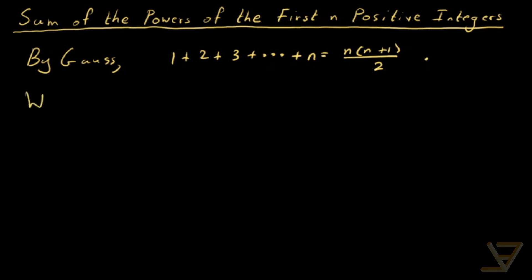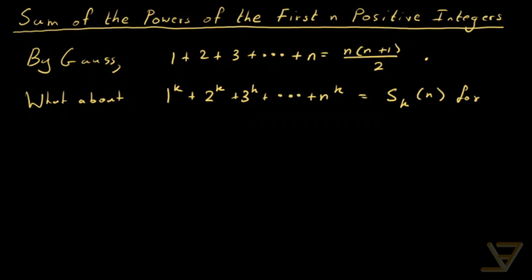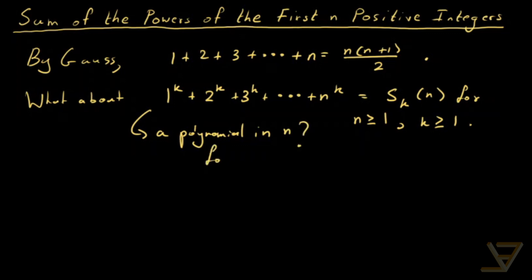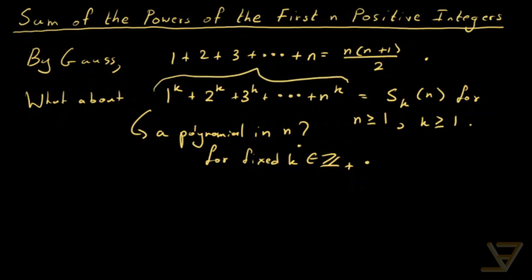The next question is: what about 1 to the k plus 2 to the k plus 3 to the k, all the way through to n to the k? We'll call it S(k, n), where n is a positive integer and k is also a positive integer. We're going to be developing a technique to find a formula for this, and what we want to know is whether this is a polynomial in the variable n for fixed k.